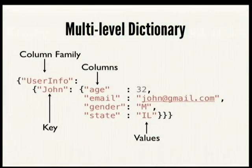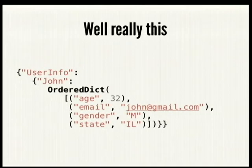Like I said, it looks like a multi-level dictionary. At the highest level you have your column family. You key into it with your key, and then your columns give you back their values. Really, at the lowest level, it's an ordered dictionary — your columns can be iterated through in sorted order.